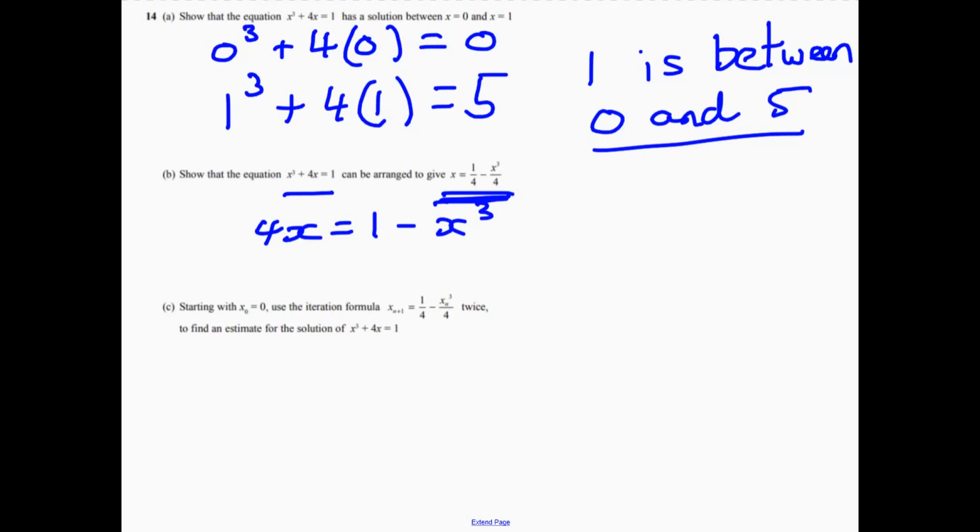Ah, look, right. And then divide by 4. And this is all you would need to do. And then 1 takeaway x cubed. And it's all over 4, which is where we wanted to get to.